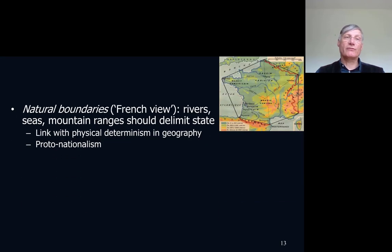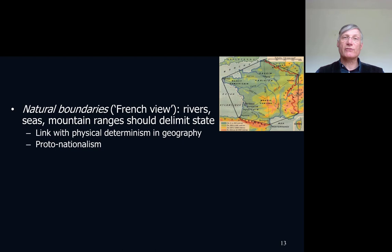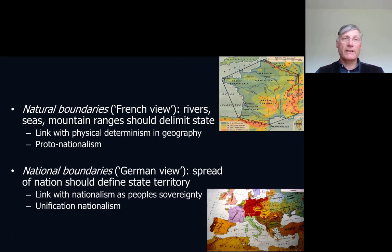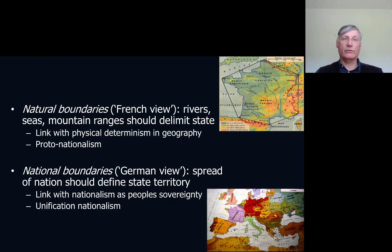So there are two basic views on borders and national identities. On the one hand, we have the French example of natural borders — the borders define more or less what the national identity is. And on the other hand, you have the idea of national borders, where you have a nation which should be bordered by a state territory.